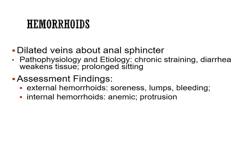Chronic straining contributes to hemorrhoids, so increasing fiber in the diet and drinking more water are key interventions. External hemorrhoids cause soreness, lumps, and may bleed. Internal hemorrhoids may also bleed, and chronic bleeding can lead to anemia. Internal hemorrhoids can also protrude outward.